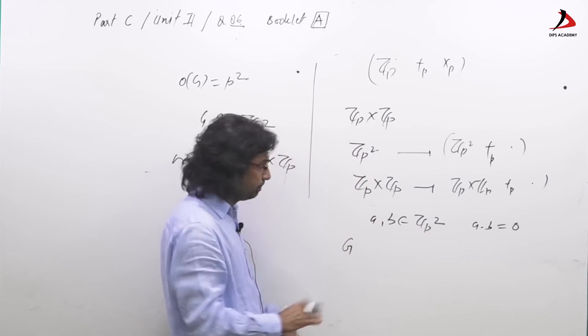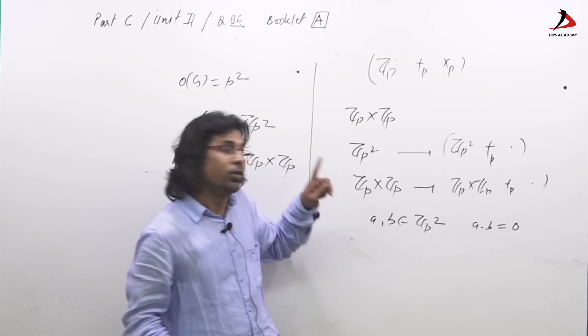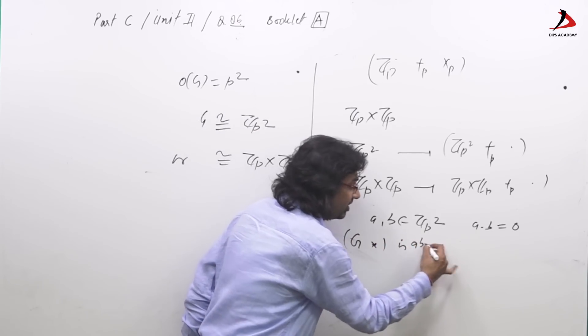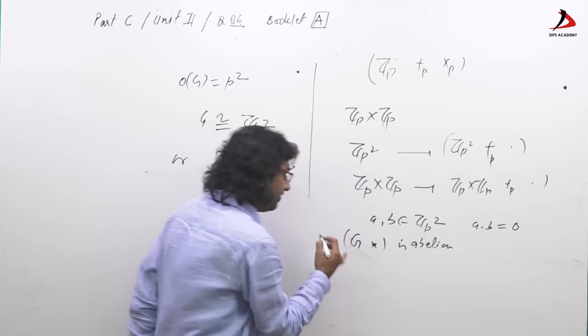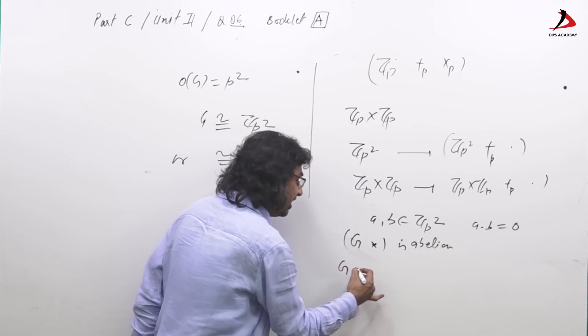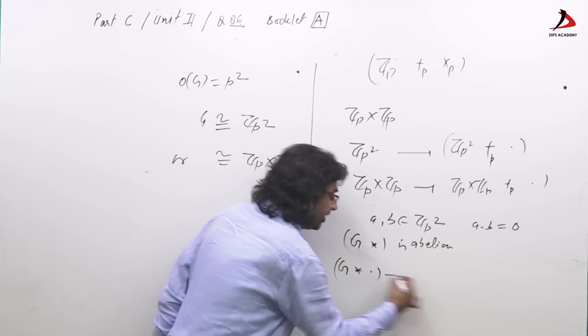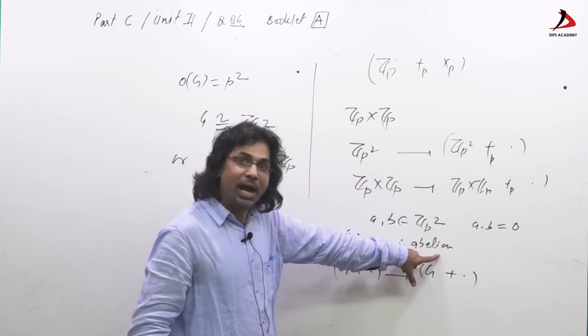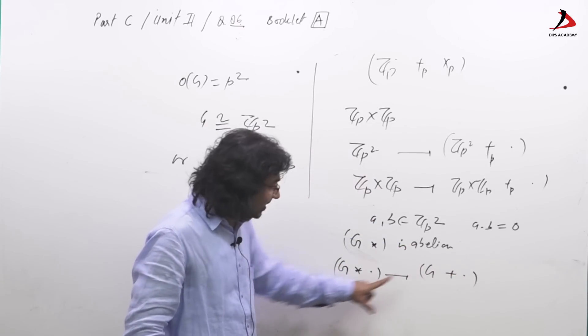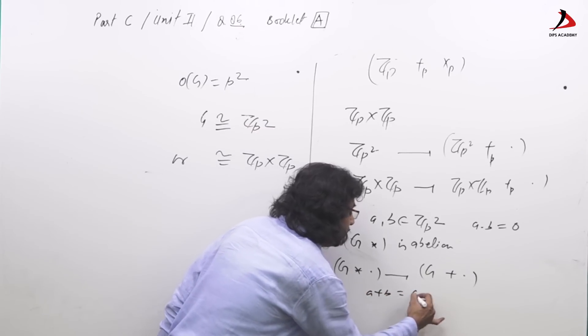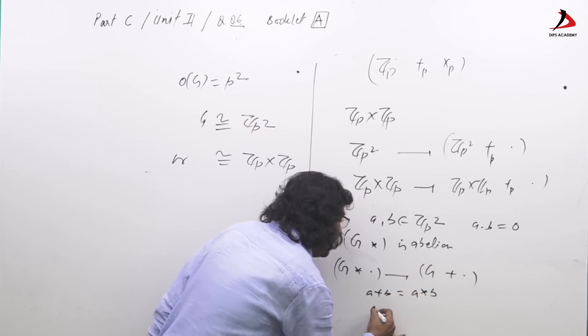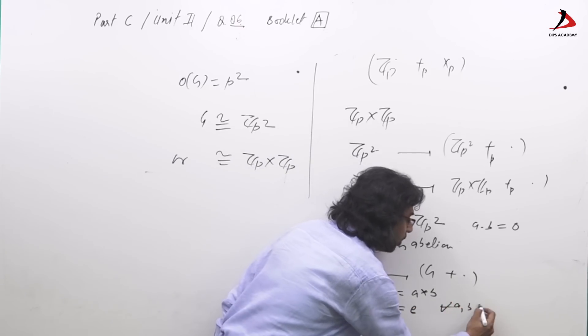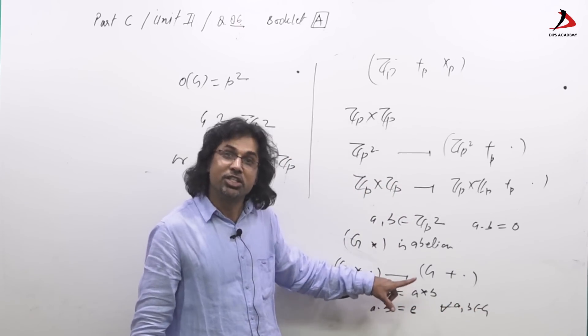For any abelian group, the point is important here, for any abelian group G, if G star is abelian we can define a group as G star dot as G plus dot. From any abelian group I can always define a ring in this fashion where A plus B equal to A star B and A dot B equal to E for all A B belongs to G. Such ring is called zero ring.